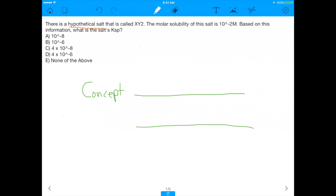It says there's a hypothetical salt that is called XY2. The molar solubility of this salt is 10 to the negative 2 molar. Based on this information, what is this salt's Ksp? And you have a ton of values here.